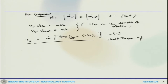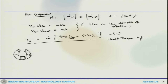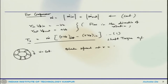Now, if you consider a compressor with blades going in rotation, the angular velocity omega is assumed constant. The blade speed at a radial distance R would be u, which is R times omega. This is how you can find out different velocity triangles.